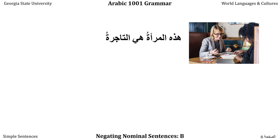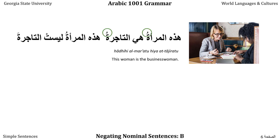Let's consider this woman. We can say 'Hathihi al-Mar'atu at-Tajiratu' — this woman is the businesswoman. Both halves of the sentence are by default in the Marfu case and both are definite, so we mark them with Dhammahs. However, saying 'Hathihi al-Mar'atu Leysat at-Tajirata,' the second half of the sentence is now in the Mansoub case because it follows Leysa. It's also definite, so we mark it with a single Fatah.